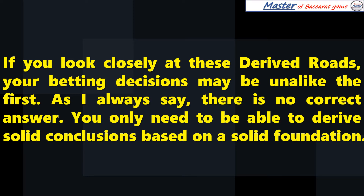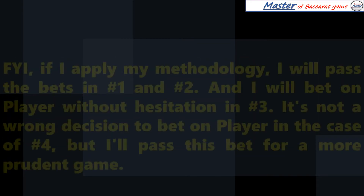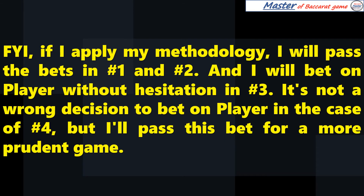Looking at these derived roads, your betting decisions may be unlike the first. As I always say, there is no correct answer. You only need to be able to derive solid conclusions based on a solid foundation. If I apply my methodology, I will pass the bets in number one and number two, and I will bet on player without hesitation in number three. It's not a wrong decision to bet on player in number four, but I'll pass this bet for a more prudent game.